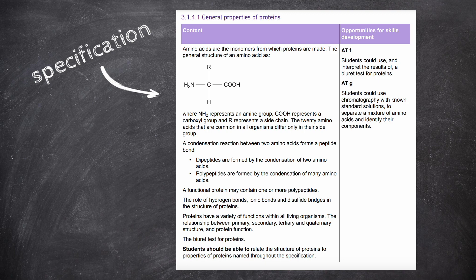As always, let's start with a look at our specification. So, proteins are polymers, and this means that they consist of monomer building blocks. The monomers they're made from are amino acids, and the specification requires us to know the general structure of amino acids.